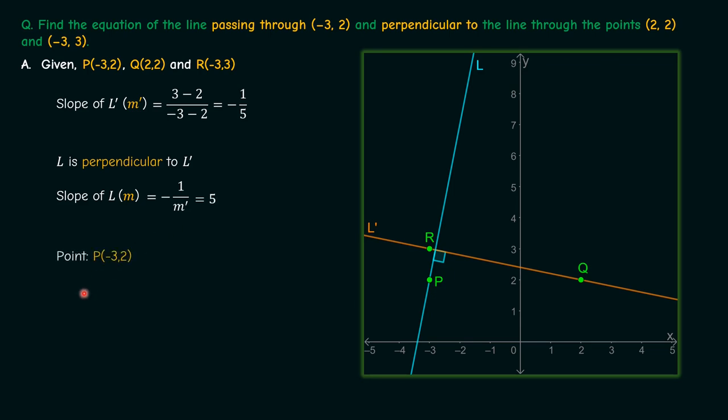So therefore we have the point that is P(-3, 2) and the slope that is m is equal to 5. So therefore by using the point-slope form the equation of the line is given by y minus 2 is equal to 5 into x plus 3. This can be simplified to 5x minus y plus 17 is equal to 0. And this is the required equation.